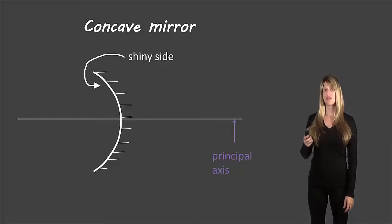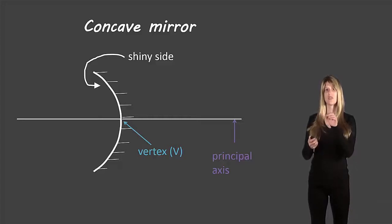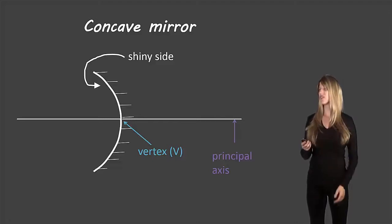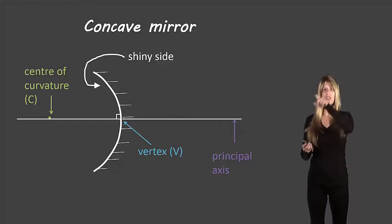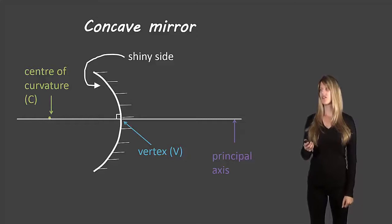Now there are a few points that we need to know on the principal axis. The first is the vertex and this is the exact point where the principal axis crosses the edge of the mirror and this happens at 90 degrees. So it's perpendicular. The center of curvature or C is the place where if that mirror was an entire circle all the way around, it would be the very center of that circle.